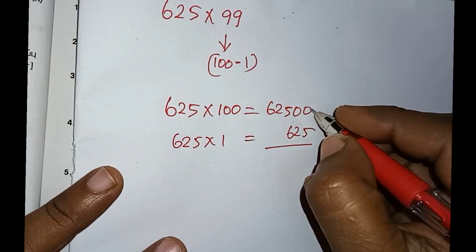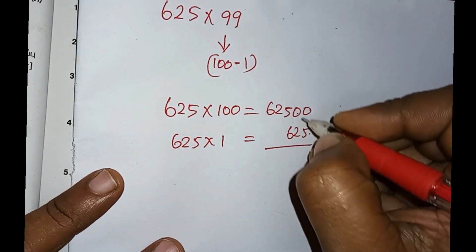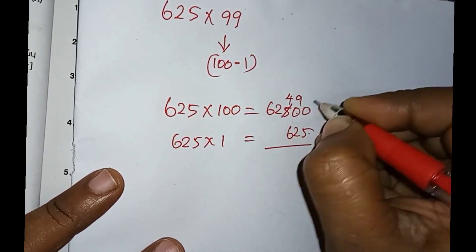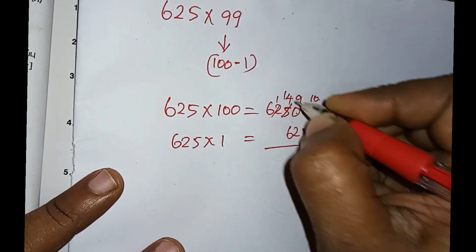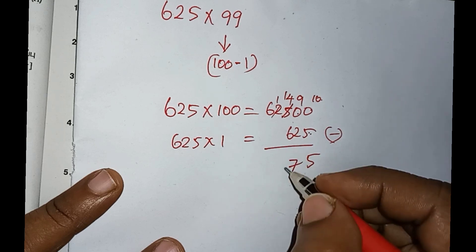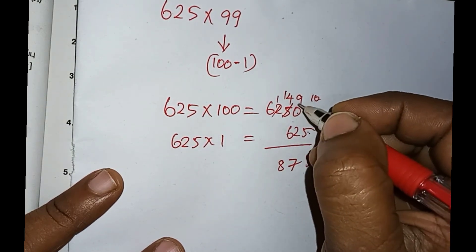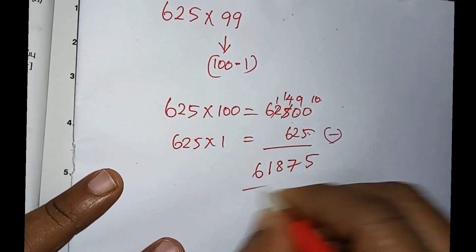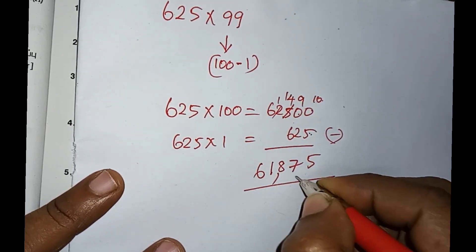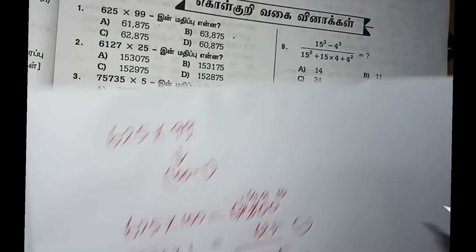We subtract 625 times 1 from this. Working through the subtraction: 0 minus 5, we borrow to get 10 minus 5 equals 5. Continue borrowing and subtracting to get 61875 as the answer.